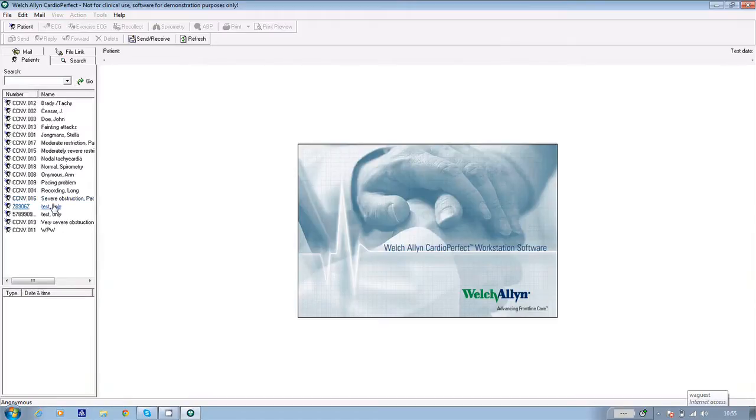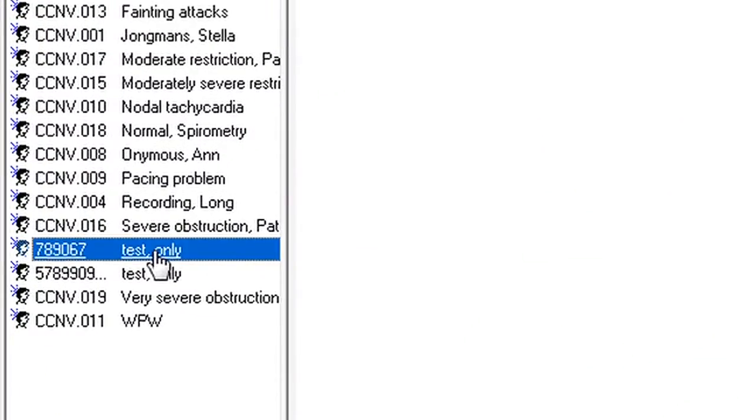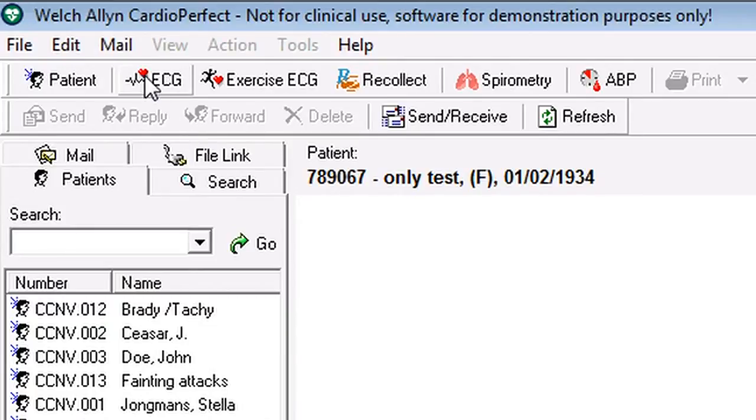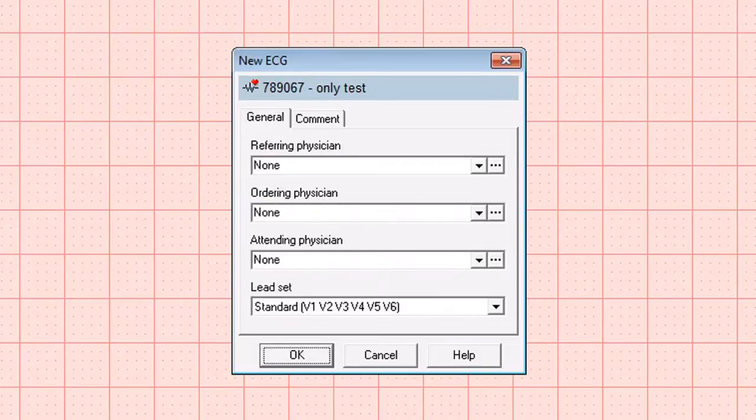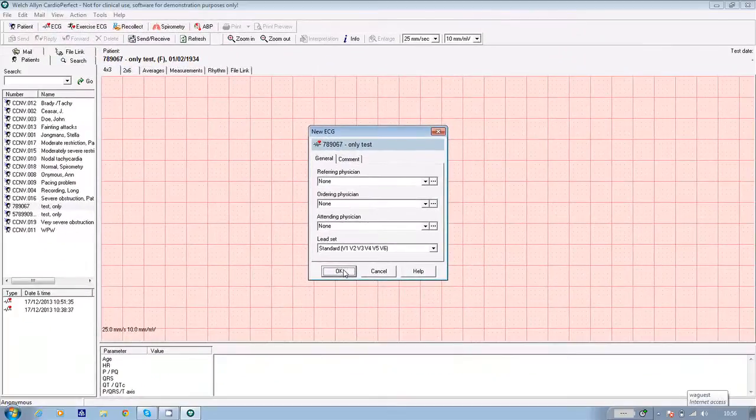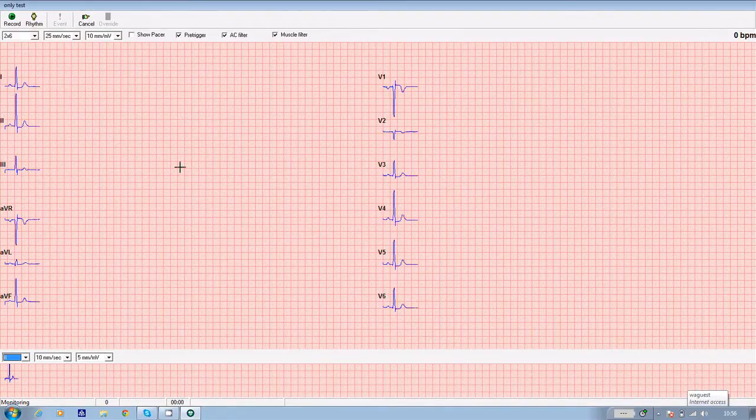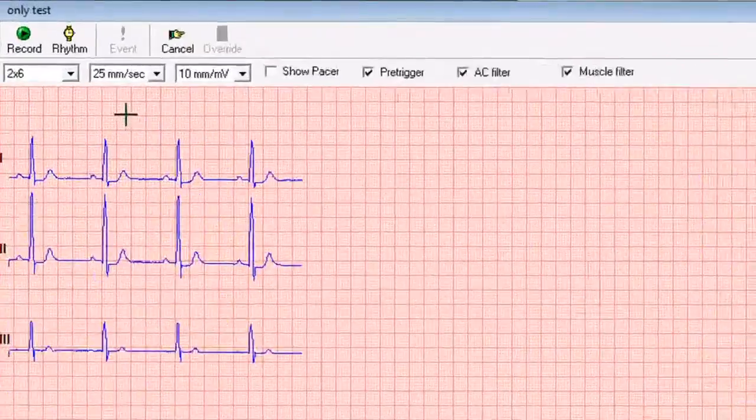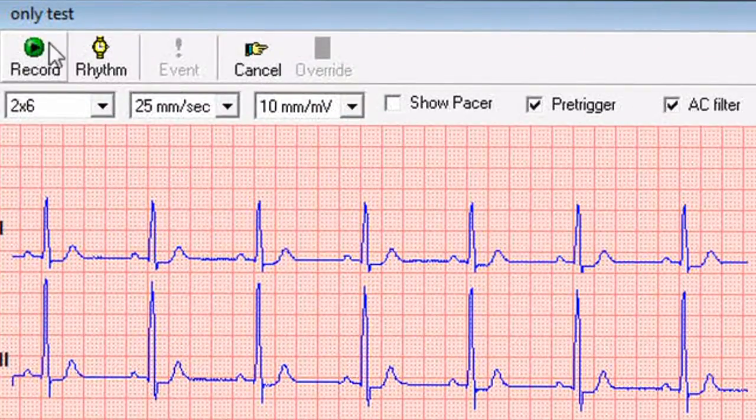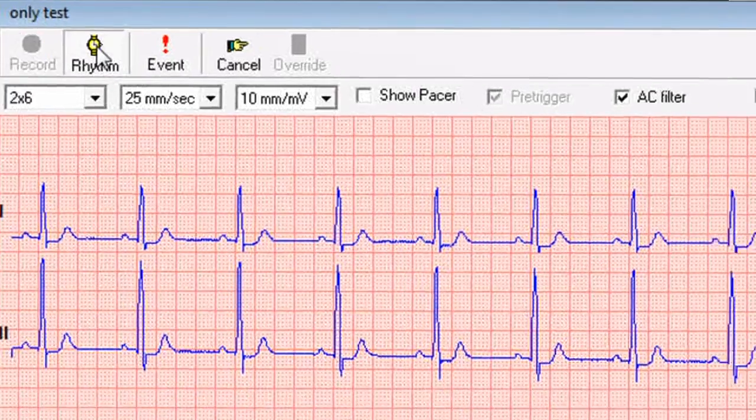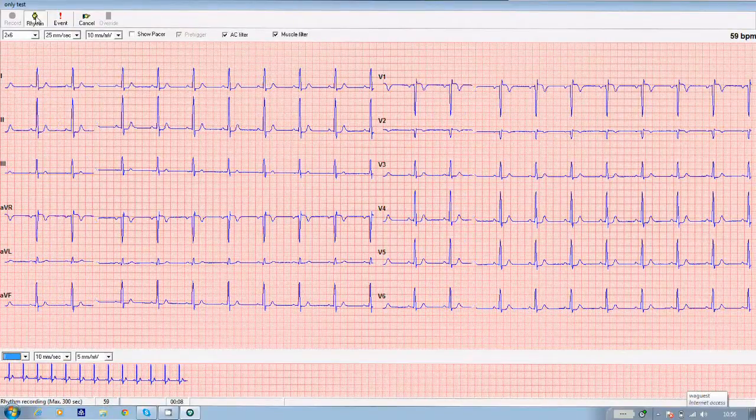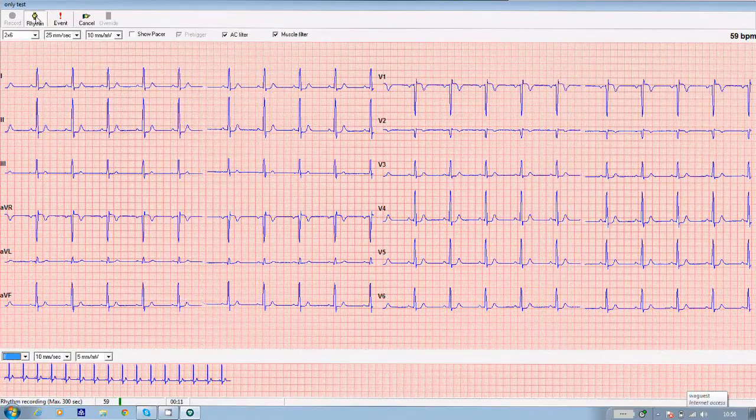But what if you want to take a longer ECG, a rhythm ECG? Well, for this, you need to go back into the software. And again, either input or find your patient. Highlight their name. And again, click on the ECG icon at the top of the screen. Again, you get a box which says new ECG and confirm by clicking OK if the patient's details are correct. Now, once again, the traces appear on the screen in real time. But to take a rhythm ECG, instead of clicking on record in the top left hand corner, click on the rhythm icon next to it. Once you've clicked on that, the software will record five minutes of ECG if you want it to.